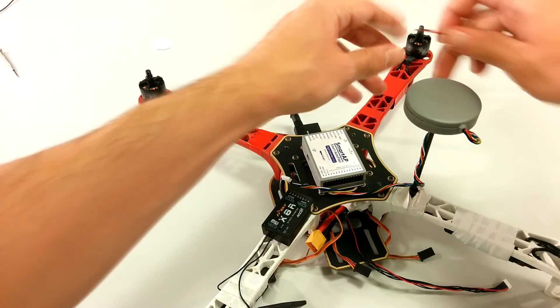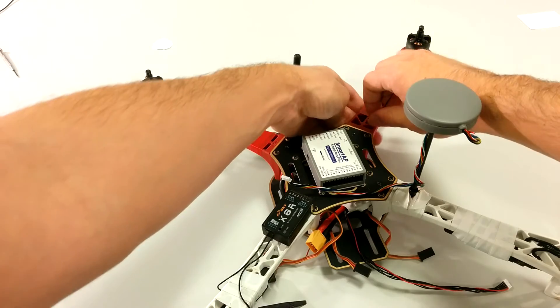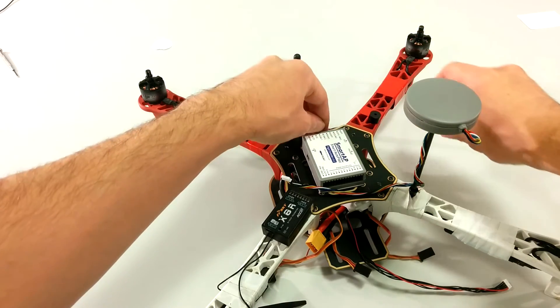Also, attach the sounder to the airframe. It can be placed anywhere you like. I will place it on one of the arms.